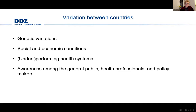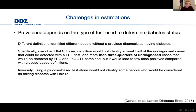At the country level, heterogeneity results from a combination of factors including genetic variations, social and economic conditions, performing or underperforming health systems, and awareness among the general public, healthcare professionals, and policy makers. It is hard to compare country to country given so many layers of complexity. It is important to consider biases and the degree of uncertainty when using estimates of undiagnosed diabetes to influence public health policy.